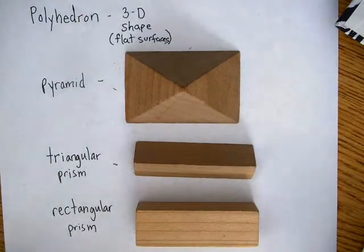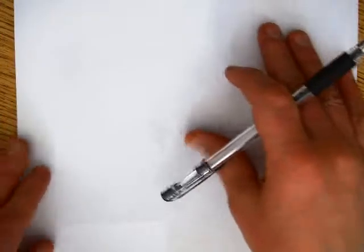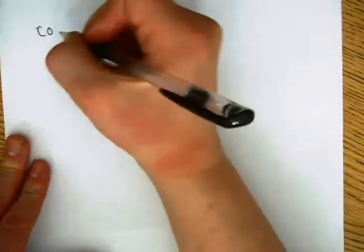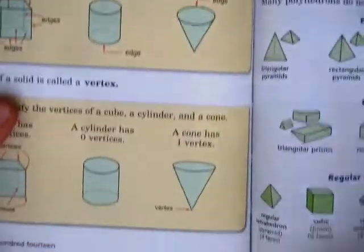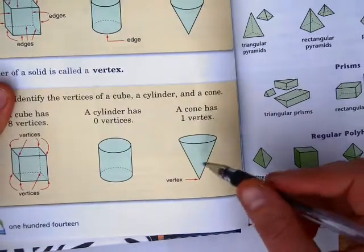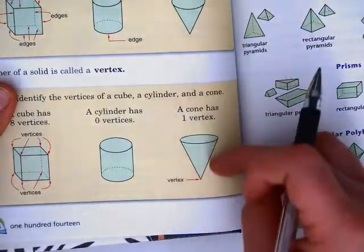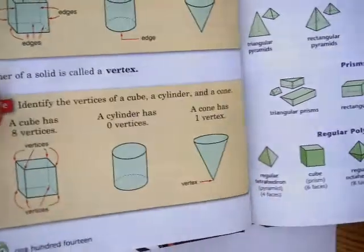The next vocabulary word is cone. Here's an example of a cone — this one's upside down, but it's still a cone. It has a circular bottom and then a round shape that comes together at a point. That's a cone.